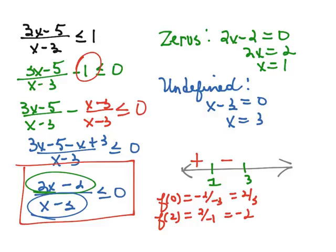And now choose a number greater than 3, say 4. We'll have 8 minus 2 is 6. And 4 minus 3 is 1. So we'll end up with 6, which is positive.